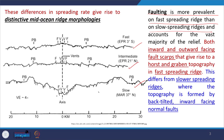Examples: the East Pacific Ridge is a fast spreading ridge, the Mid-Atlantic Ridge is a slow spreading ridge, and the Southwest Indian Ocean Ridge is an ultra-slow spreading ridge. The difference in spreading rate gives rise to distinct mid-oceanic ridge morphologies. Faulting is more relevant on fast spreading ridges than slow spreading ridges and accounts for the vast majority of its relief.